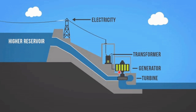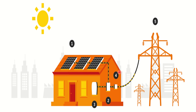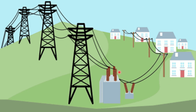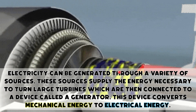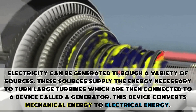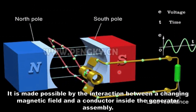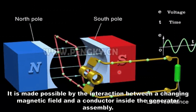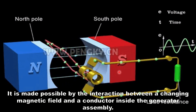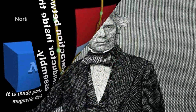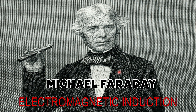Electricity may also be generated from other sources such as running water, wind, light, heat from the sun, nuclear reactions, burning of fossil fuels, and many more. The Philippines, in its quest to sustain its rising economy, has tapped several viable yet non-conventional energy resources. Now, let us talk about generation and magnetism. These sources supply the energy necessary to turn large turbines which are connected to a generator — a device that converts mechanical energy to electrical energy. This is made possible by the interaction between a changing magnetic field and a conductor inside the generator assembly. A magnet or conductor at rest cannot produce electric current, so current is induced by either moving the magnet or the conductor. This phenomenon was discovered by Michael Faraday and is known as electromagnetic induction.